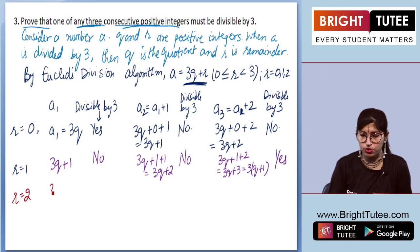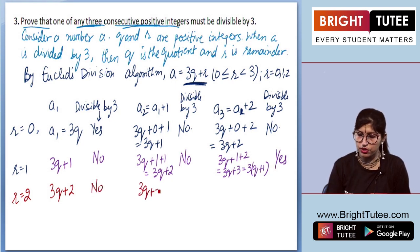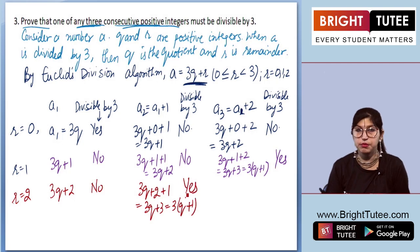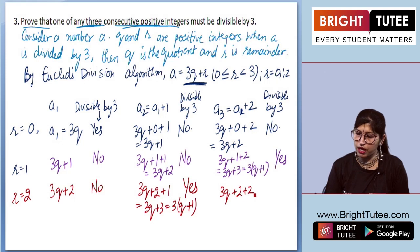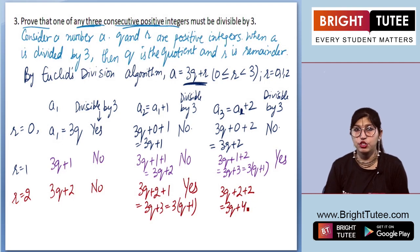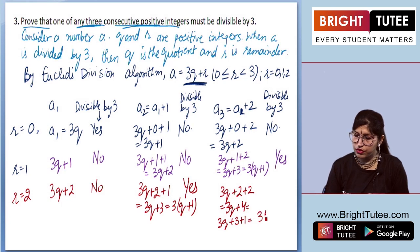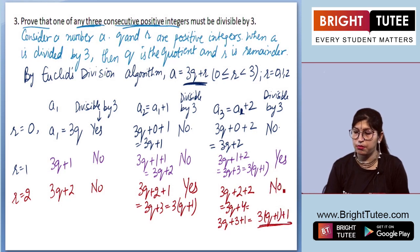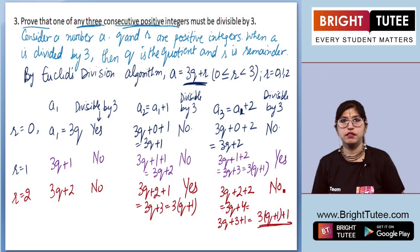When r equals 2, a1 equals 3q plus 2, which is not divisible by 3. Then a2 equals 3q plus 2 plus 1, which is 3q plus 3, or 3 times (q plus 1), which is divisible by 3. And a3 equals 3q plus 2 plus 2, which is 3q plus 4, or 3 times (q plus 1) plus 1, which is not divisible by 3.